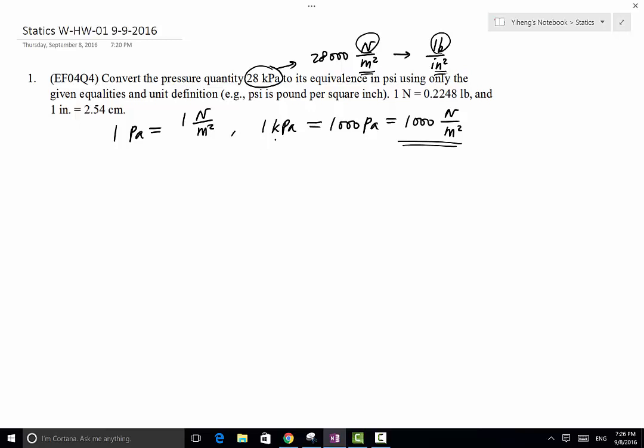So in order to convert N per meter squared to pound per inch squared, we establish the equalities. The relation between N and pound is 1 N equals to 0.2248 pound, that's given here. And we also know that 1 inch equals to 2.54 centimeter.